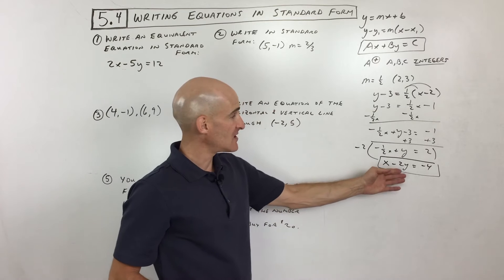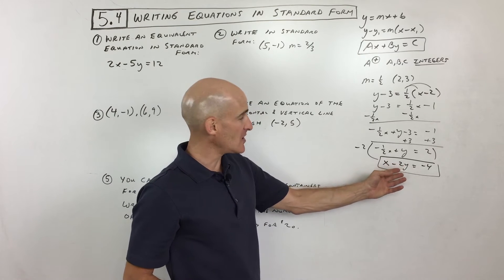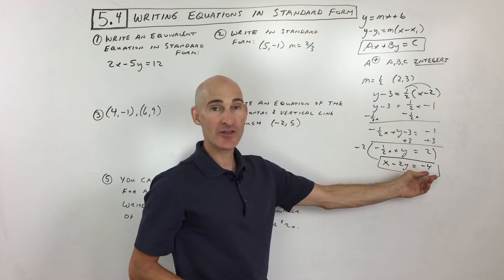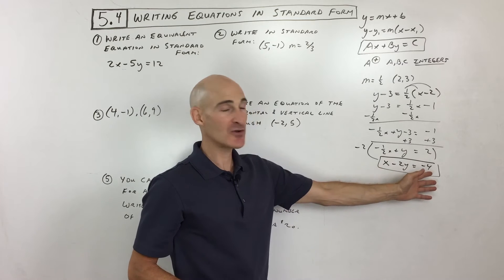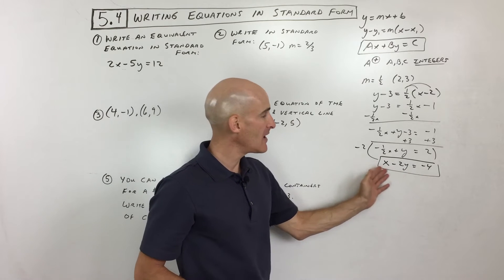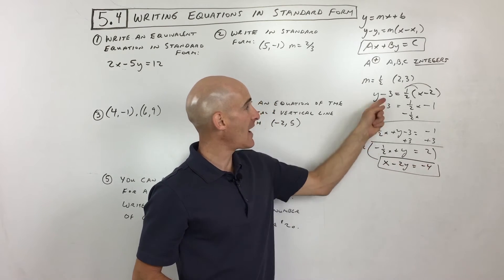So that's going to be x minus 2y equals negative 4. And the nice thing about the standard form is it's easy on the eyes, right? It's easy to read. You've got the variables on the left, numbers on the right, nice round numbers, integers. It starts off with a positive number. Nice, neat form of the equation with a line, as opposed to this.